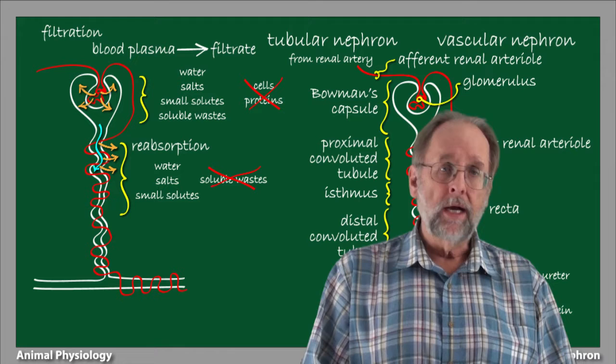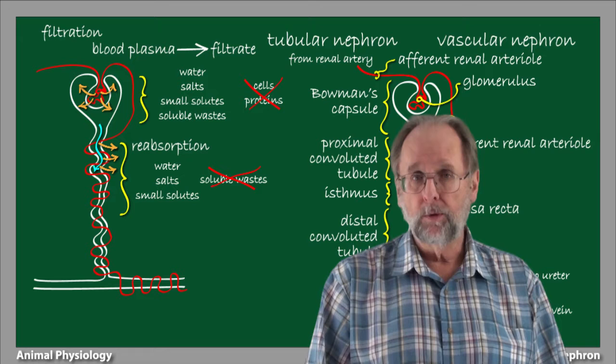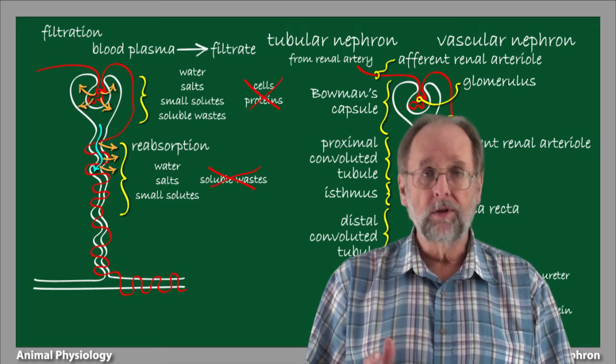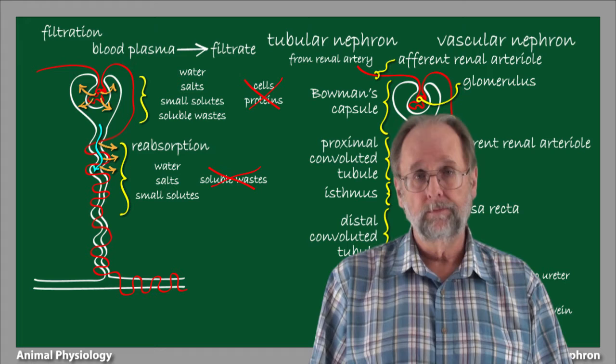Again, we come back to the logic of the nephron, so to speak. The process of filtration involves the removal of voluminous amounts of material from the blood and translocating it into a space, the interior of the tubular nephron, that is topologically contiguous with the outside environment. Reabsorption recovers useful materials back into the body water before the filtrate is excreted from the body as urine.